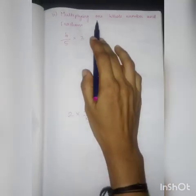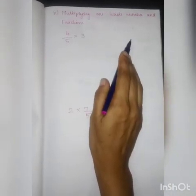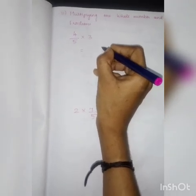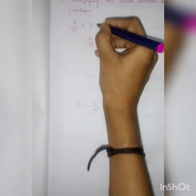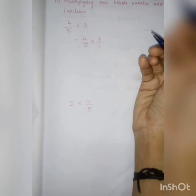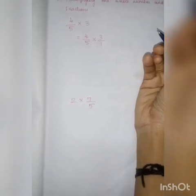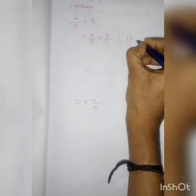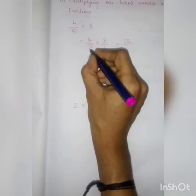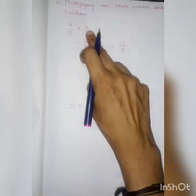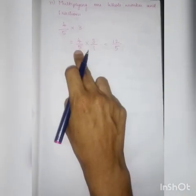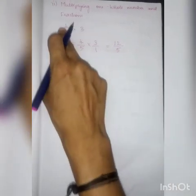Next is multiplying a whole number and a fraction. If a whole number like 7 is given, you write it as 7 by 1. So for example: 4 by 5 into 3 — write 3 as 3 by 1. Now as per the multiplication rule, multiply numerator into numerator: 4 times 3 is 12. Denominator into denominator: 5 into 1 is 5. So 12 by 5 is the multiplication answer. If there is a whole number, write it with denominator 1, then multiply as usual.